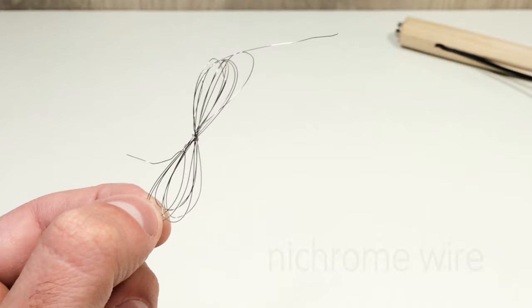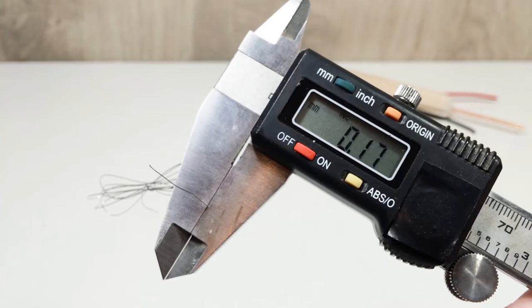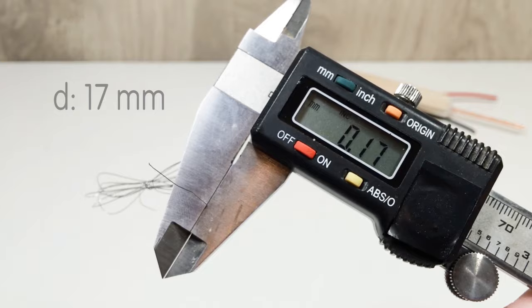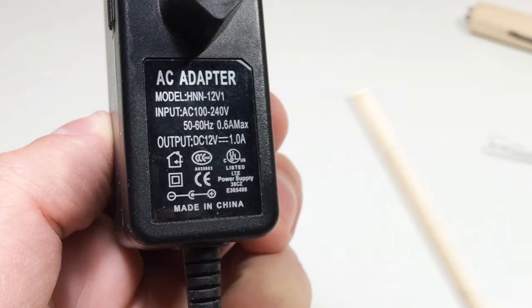Next step, we need a thin nichrome wire. We make a heating element from nichrome wire. As well, we need a power supply with characteristics of 12 volts and 1 ampere.